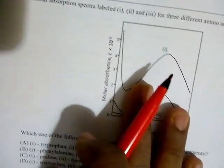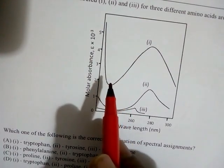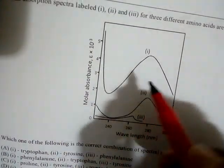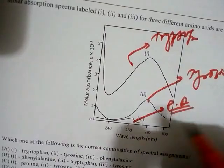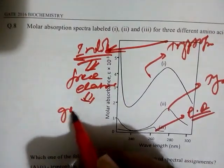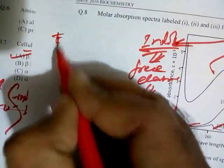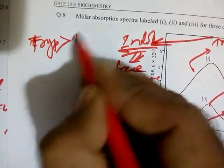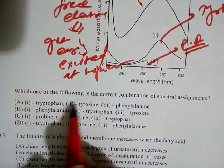Question eight: Regarding the molar absorption spectrum at 280 nm for different amino acids — proteins show a peak at 280 nm due to three aromatic amino acids: tryptophan, tyrosine, and phenylalanine. The maximum absorption peak belongs to tryptophan, followed by tyrosine, then phenylalanine. Tryptophan has an indole ring with more free electrons, which allows it to be excited more easily at this wavelength.